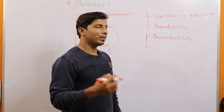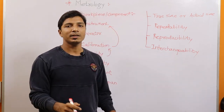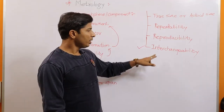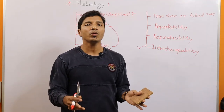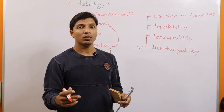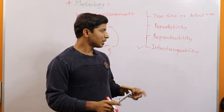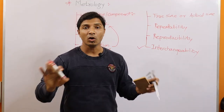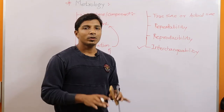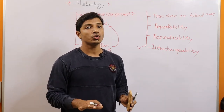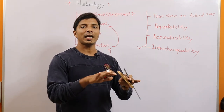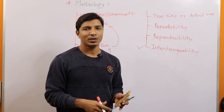The next parameter is interchangeability, which is very important for standardization. Interchangeability is the ability of a component to be replaced. If there is a problem in any system, you should be able to replace that particular component without replacing the whole system. These are the basic and fundamental parameters you should know before moving further. In the next lecture, we will discuss different types of standards — primary, secondary, and tertiary.